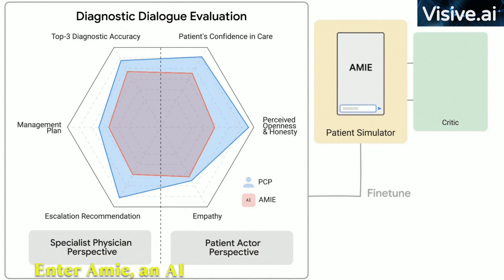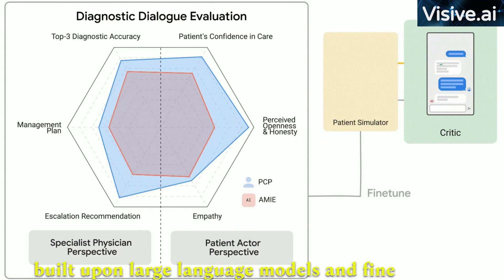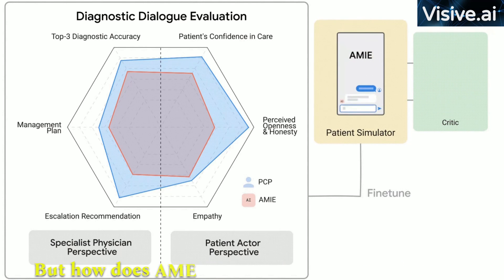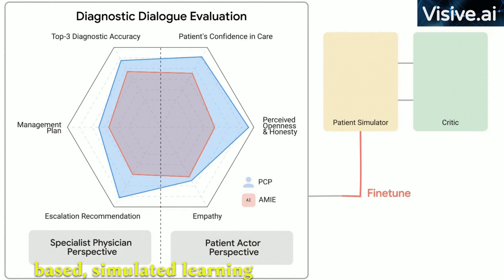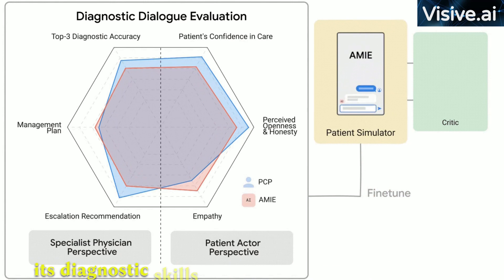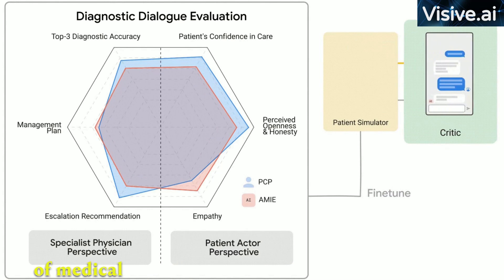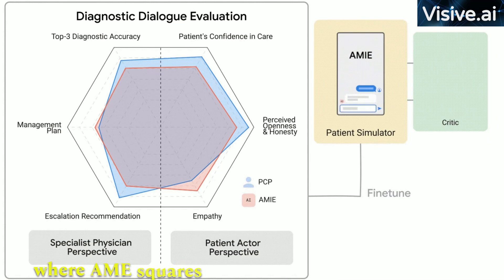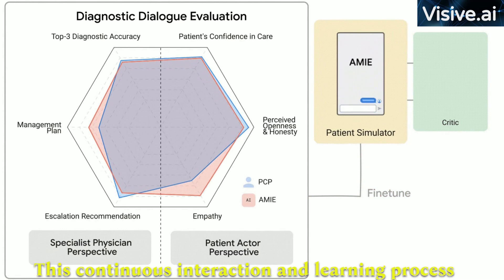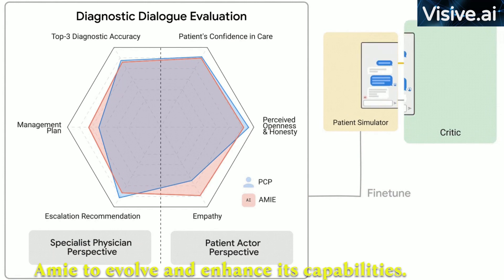Enter AMIE, an AI system built by Google upon large language models and fine-tuned to traverse the intricate maze of medical dialogue. But how does AMIE learn? Imagine a self-play-based simulated learning environment. This setting allows AMIE to continually refine its diagnostic skills across a wide range of medical conditions and scenarios — like a constant sparring match where AMIE squares off against simulated patients portrayed by trained actors.